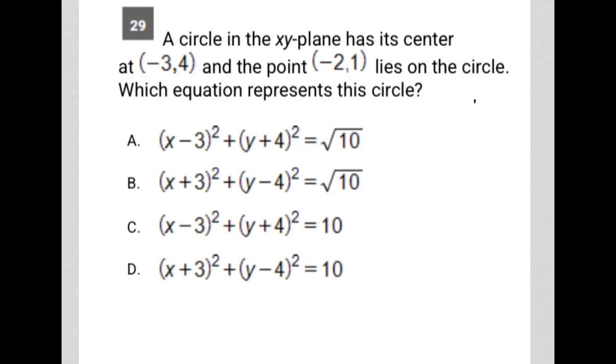Part of me wants to draw a graph because that's what I like to do whenever I see a question that describes something that can be drawn. I would find where that center is - negative 3, 1, 2, 3, 4. So (-3, 4) would be the center of my circle and then (-2, 1) would be there, which means my circle looks something like that.